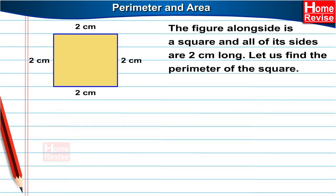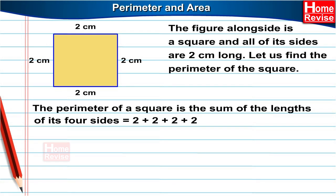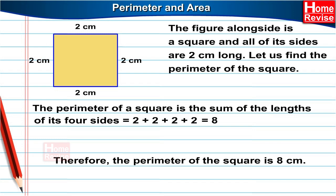The figure alongside is a square and all its sides are two centimetres long. Let us find the perimeter of the square. The perimeter of a square is the sum of the length of its four sides. So it is two plus two plus two plus two, which is equal to eight. Therefore, the perimeter of the square is eight centimetres.